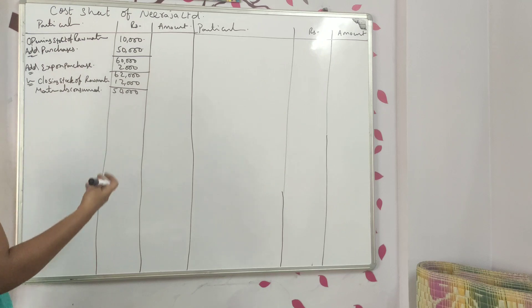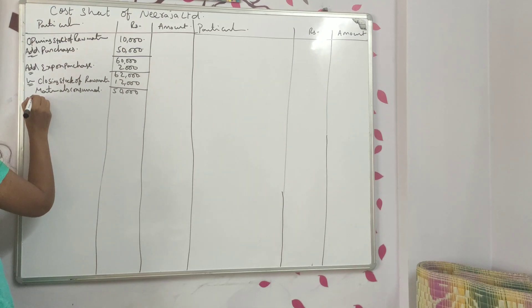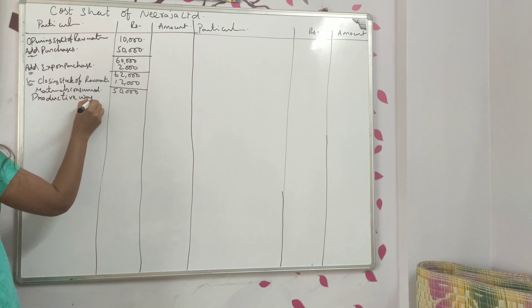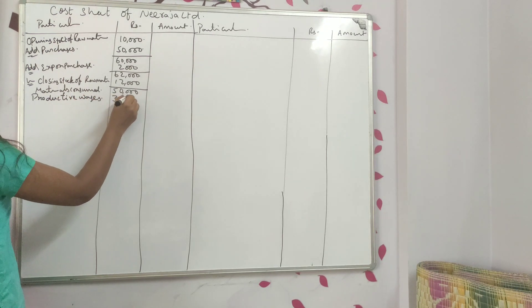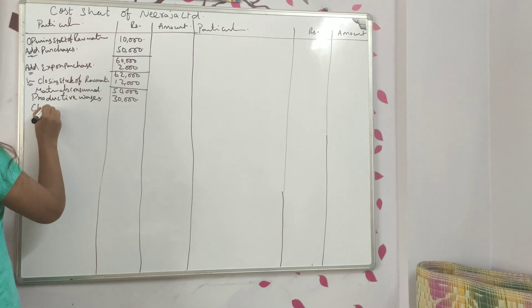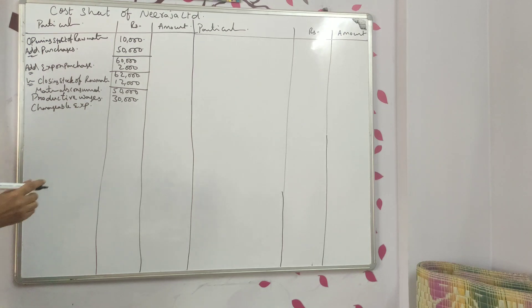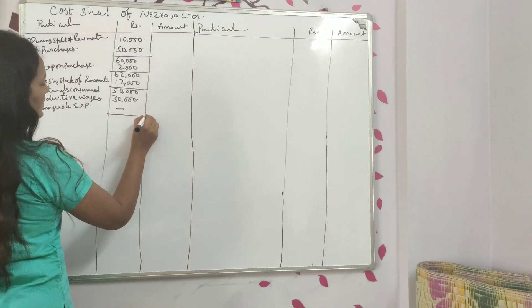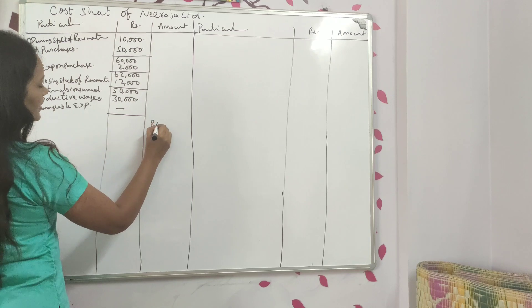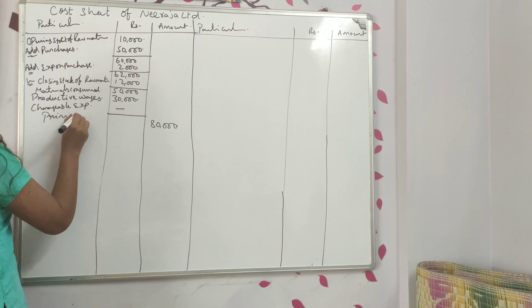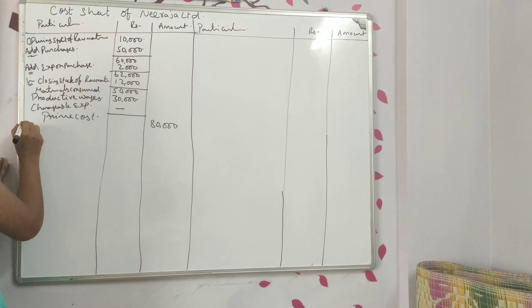Next, is there any productive wages? Yes — productive wages of Rupees 30,000. Are there any chargeable expenses? No — nil. So the total is 80,000. This is called prime cost.